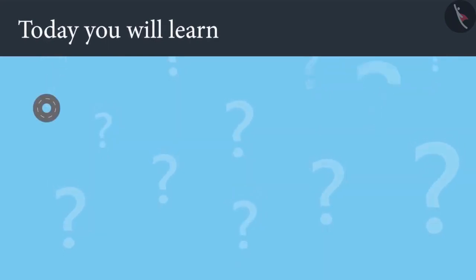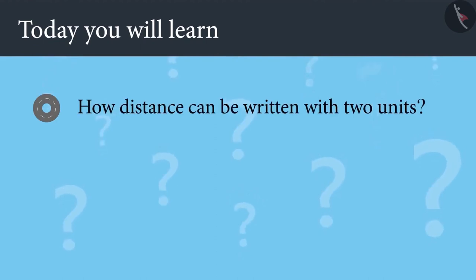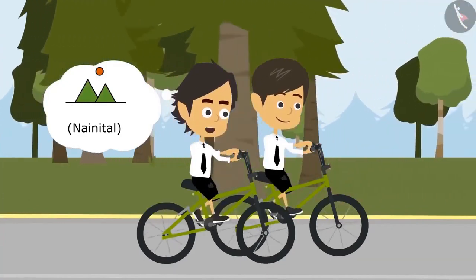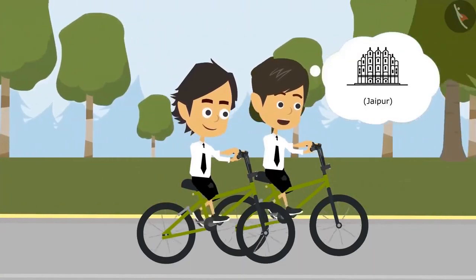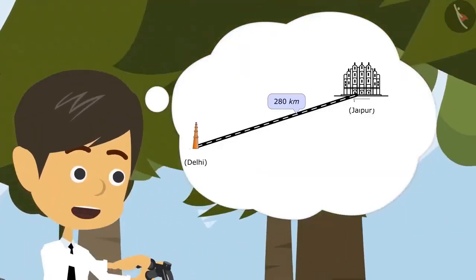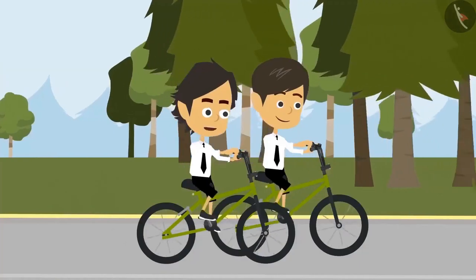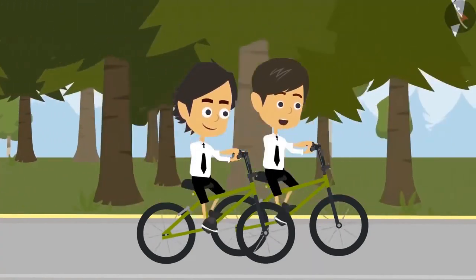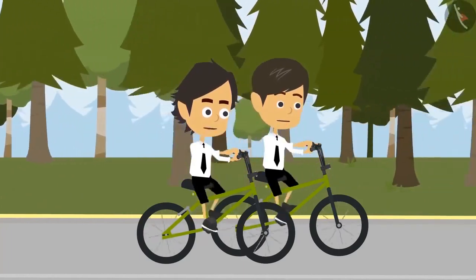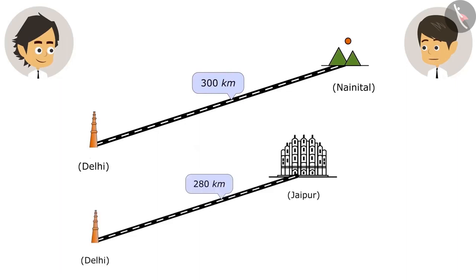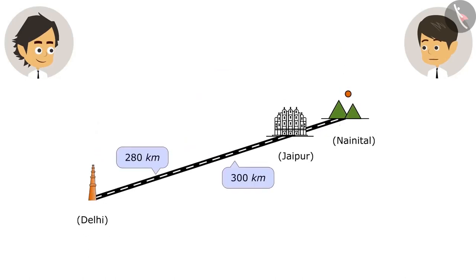Today you will learn how distance can be written with two units and how to add or subtract two lengths given in two units. Nainital is 300 kilometers away and Jaipur is 280 kilometers away. The students incorrectly calculate that the distance between Jaipur and Nainital is only 20 kilometers by subtracting the two values.